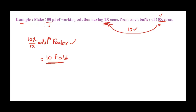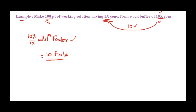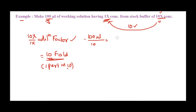Once we've established the dilution factor, we need to figure out the quantity — in this case 100 microliters. Take the final quantity you need (100 microliters) and divide by 10, the dilution factor, because a 10-fold dilution means one part in ten. I need 100 microliters total, so I take one-tenth of that — which gives me the amount of stock I need to take: 10 microliters.